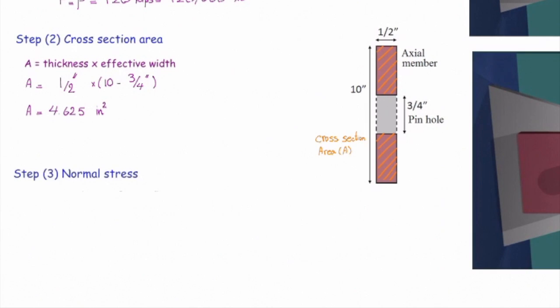How much is stress? It's simply force over area. Let me plug the value, and that gives me 25,950 pounds per square inch, which is 25,950 psi.